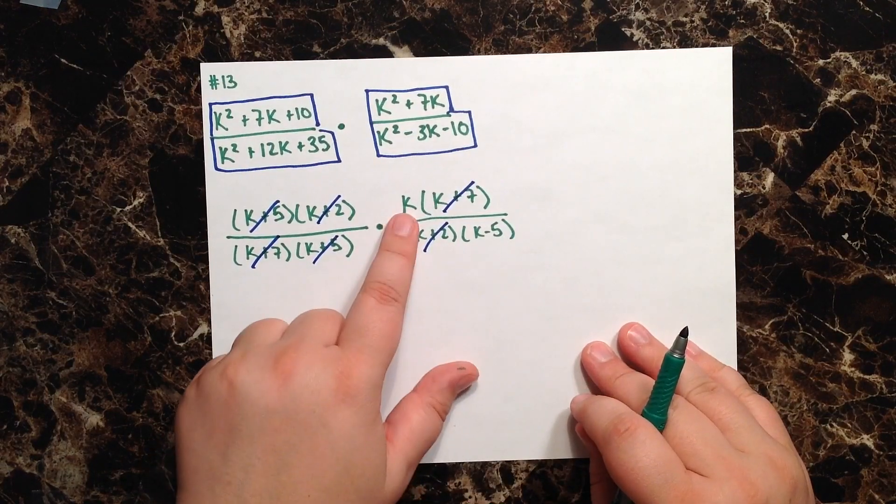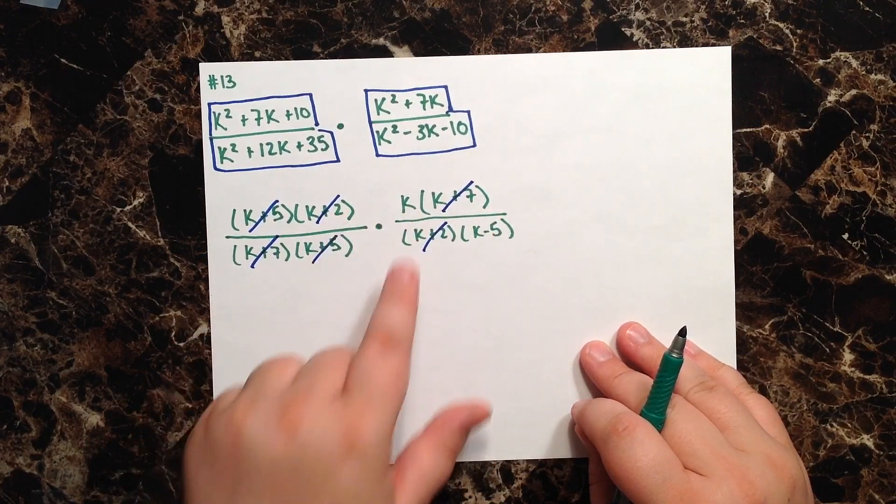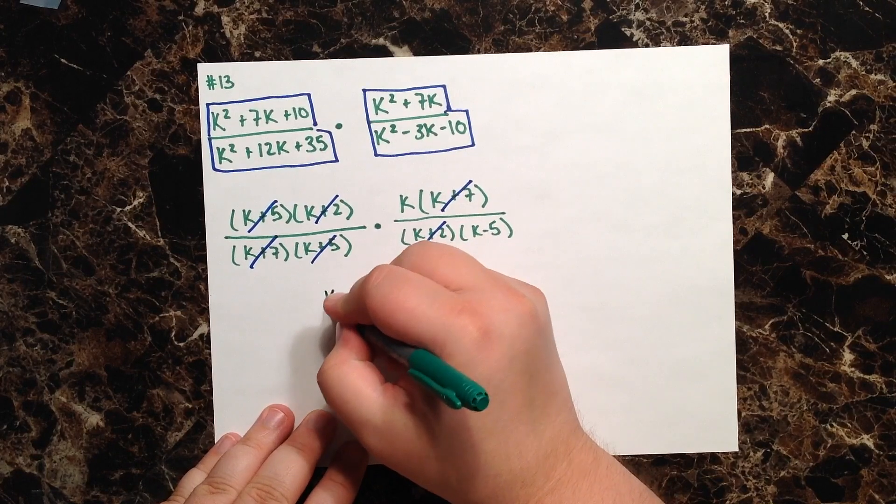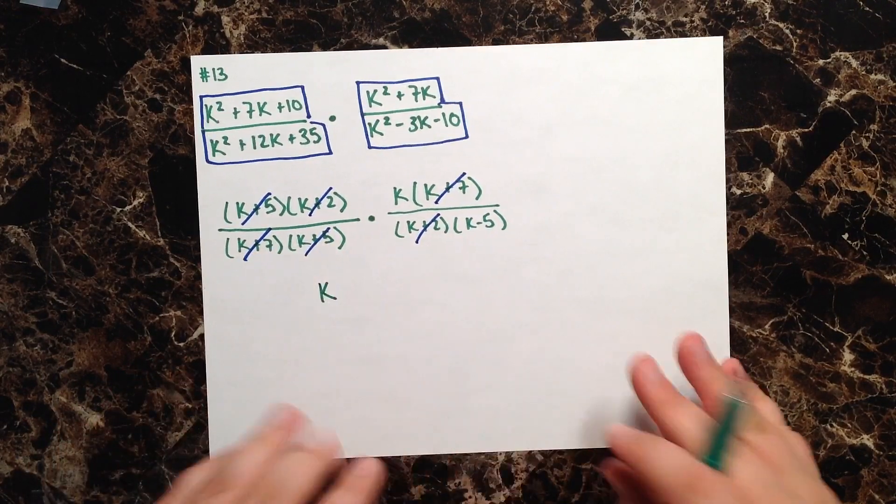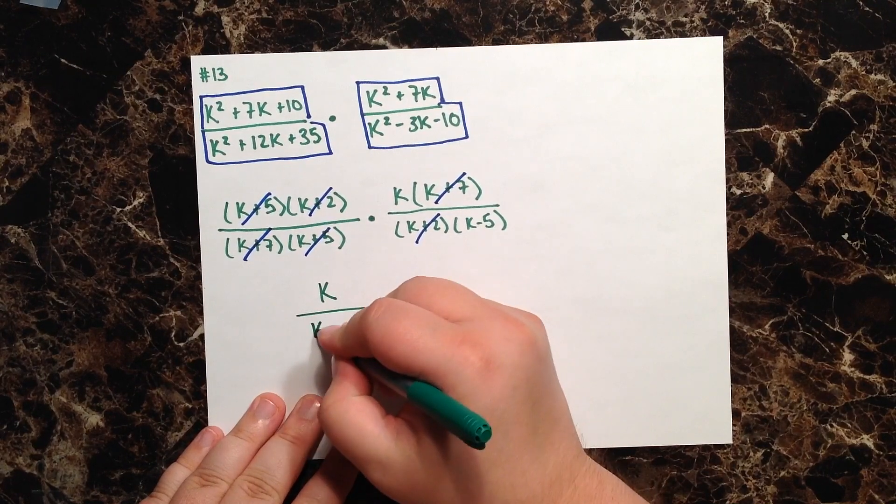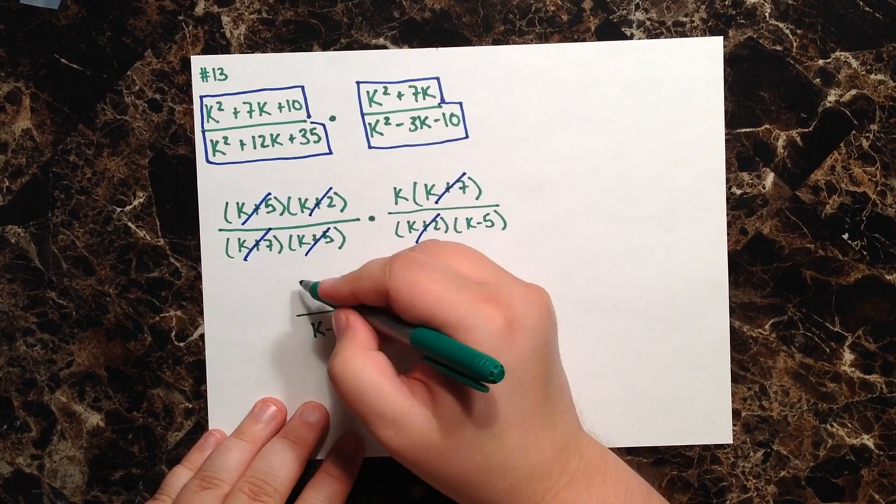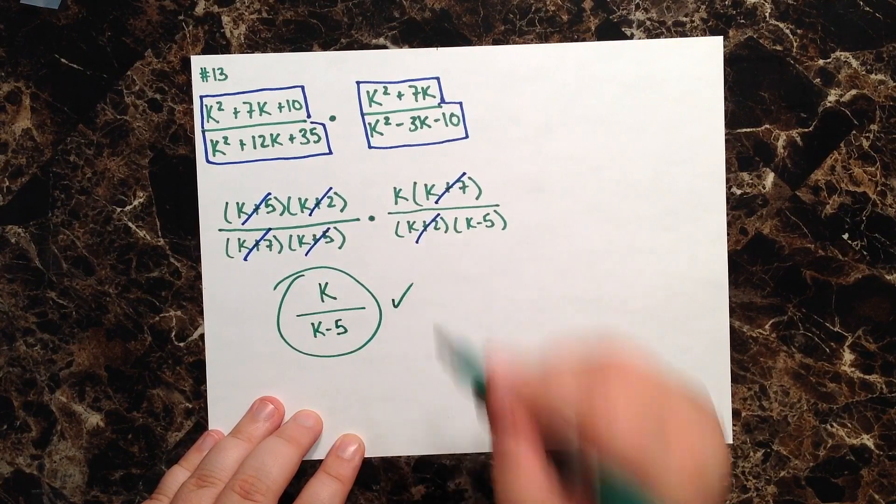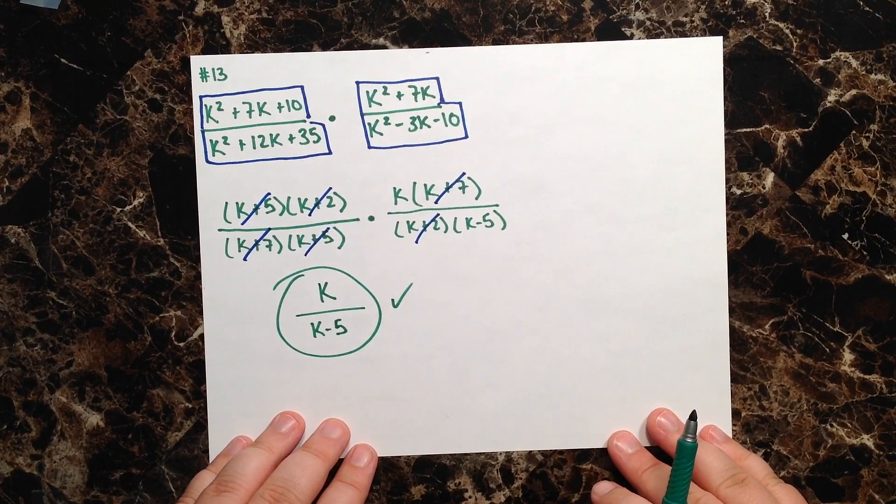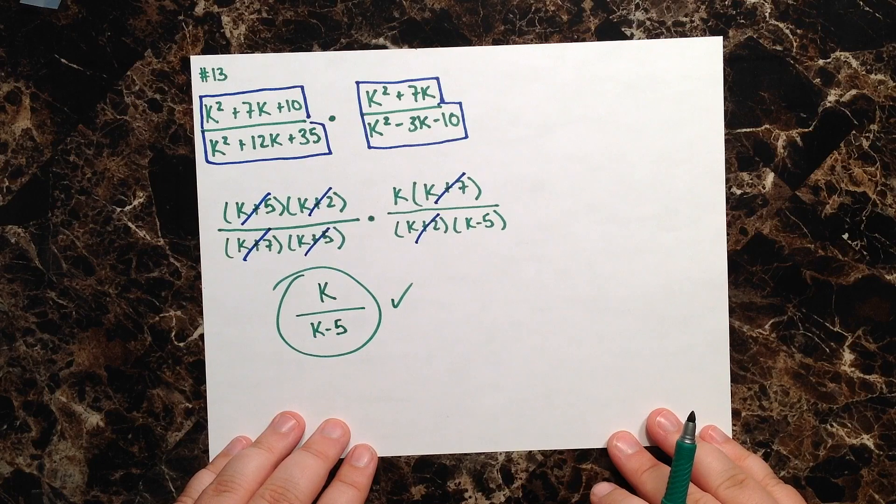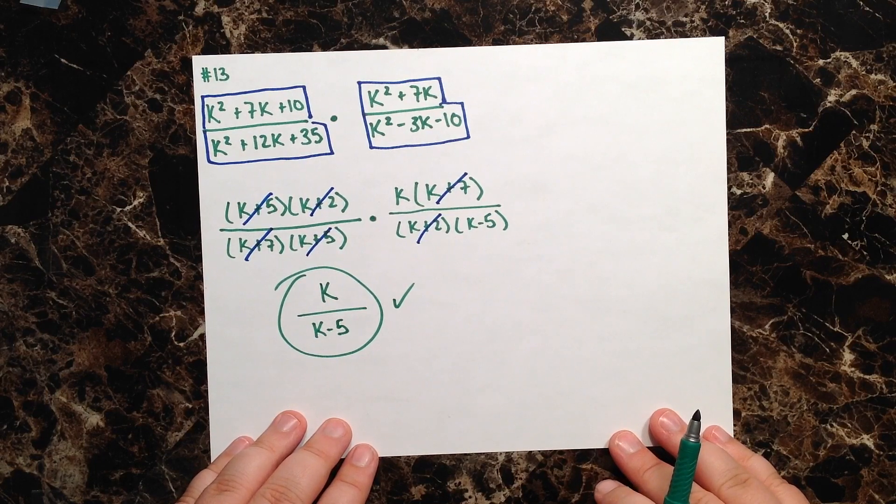In my numerator, I'm just left with a k, and in my denominator, I'm just left with a k minus 5. This cannot be simplified any further, and so the final answer is just k over k minus 5.